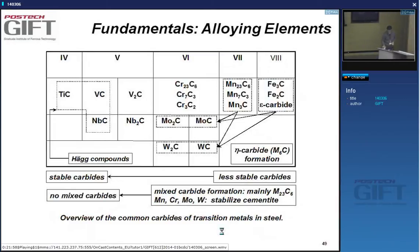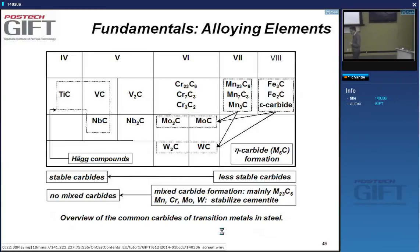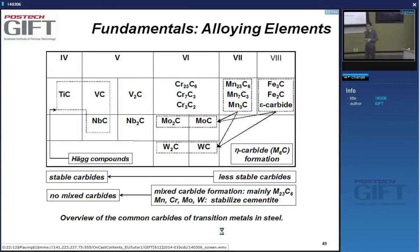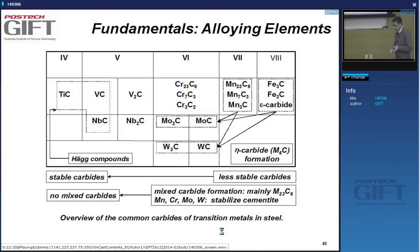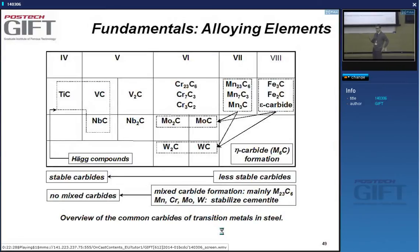In carbon steels there are numerous possible precipitates, but the very important ones are carbides. In general, thinking about the periodic table, the elements to the left of iron form carbides, while elements on the right-hand side do not form carbides. That is why the section of the periodic table with alloying elements encountered in steels and their carbides is shown here.